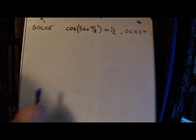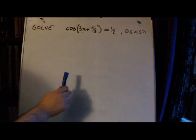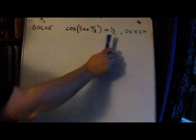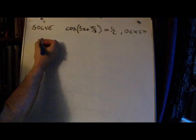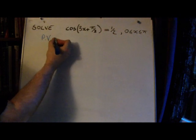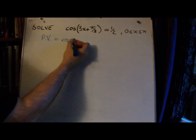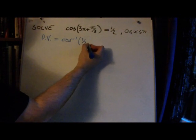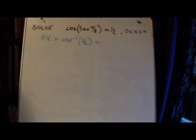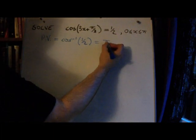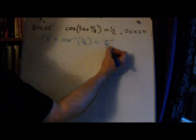To begin with, we're going to kind of ignore this part and we're going to find the principal value associated with this bit. So the principal value in this case is the inverse cosine function of a half, and that will give you π over 3 radians.